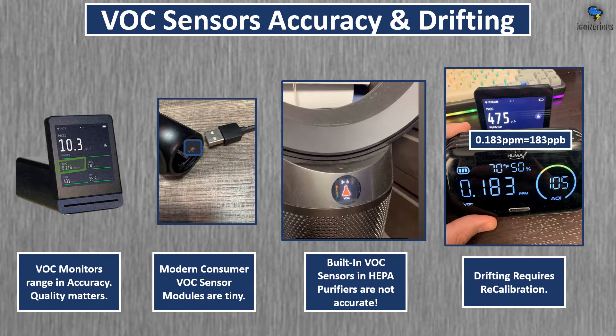VOC sensors drift and require recalibration every once in a while — it could be once every two weeks. It takes four hours to recalibrate a VOC sensor. It's not difficult; you can find this information in your manual.